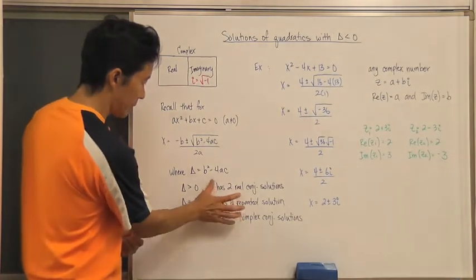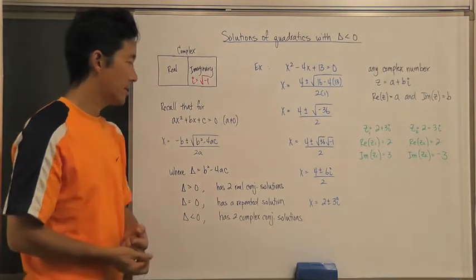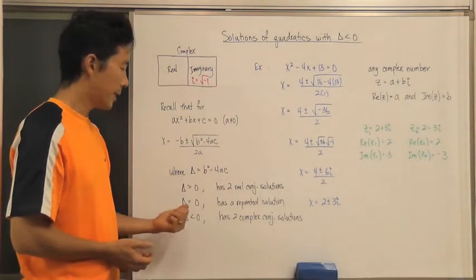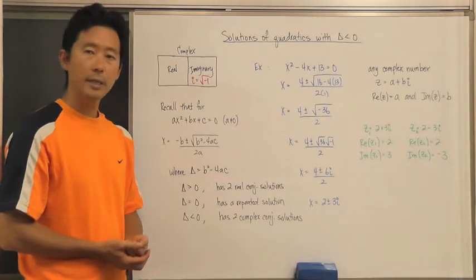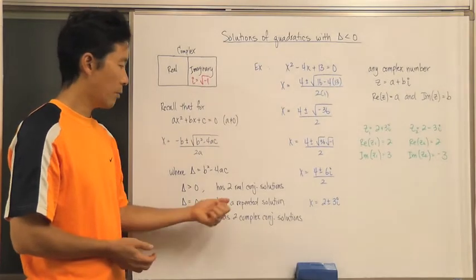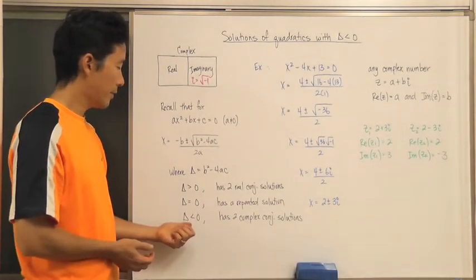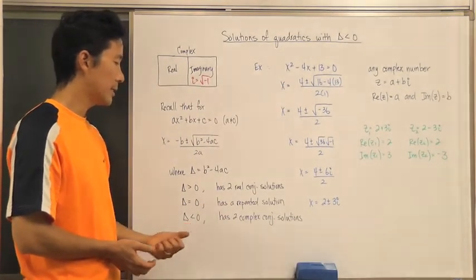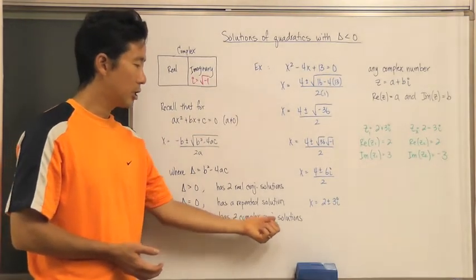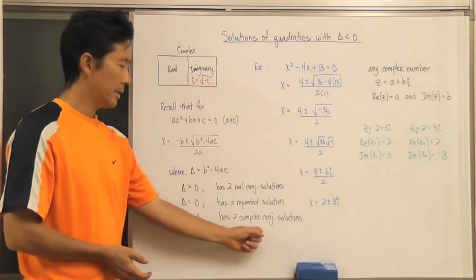If delta equals zero, then the quadratic has a repeated solution. And if delta is less than zero, we have two complex conjugate solutions. Let's take a closer look at this particular case.